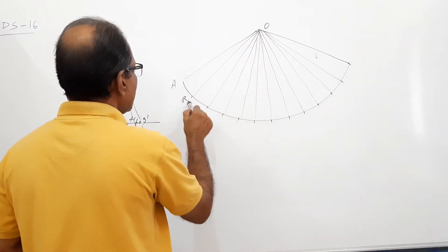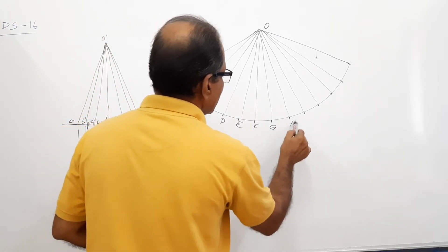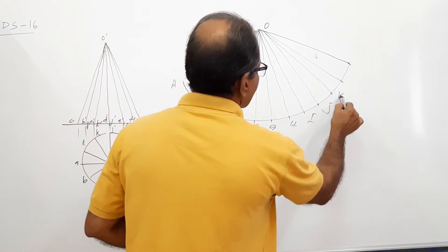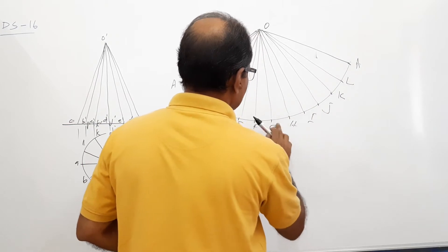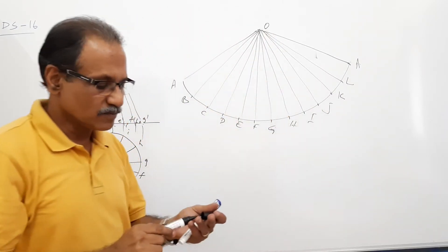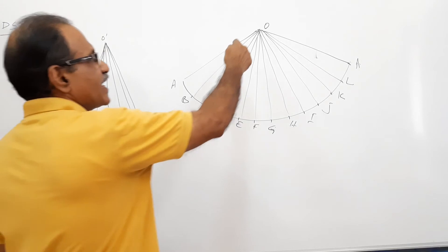You get all the 12 generators of the cone reproduced in the development. A, B, C, D, E, F, G, H, I, J, K, L, A. I hope you understood. This we have done earlier.